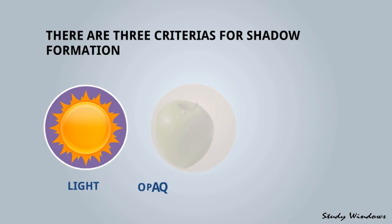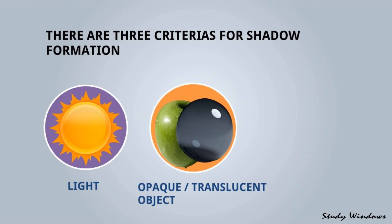So there are three criteria for shadow formation: one is light, another one is opaque object or translucent object, and a screen or the surface where the shadow is formed.